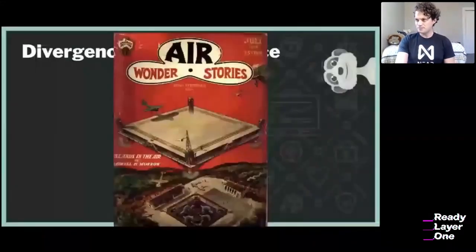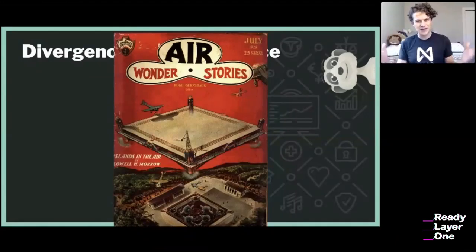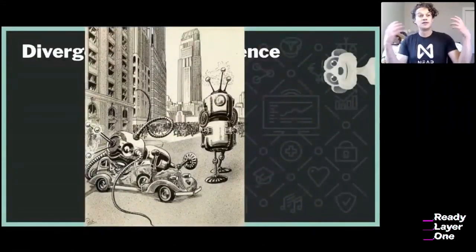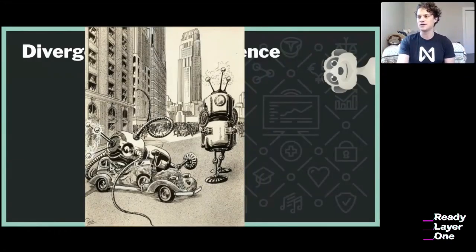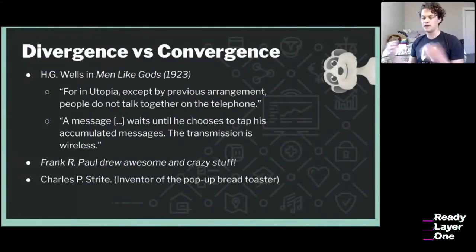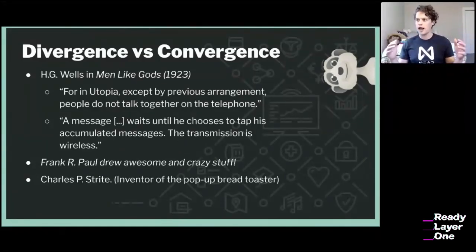There were ideas about floating airports and, of course, killer robots. We do have killer robots — not quite revolting against us the way people imagined when strong AI takes hold. H.G. Wells, the author of The Time Machine and War of the Worlds, wrote a story called Men Like Gods in 1923 about a theoretical utopia set roughly 100 years in the future.